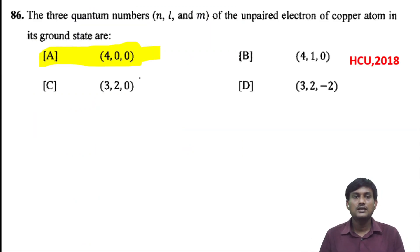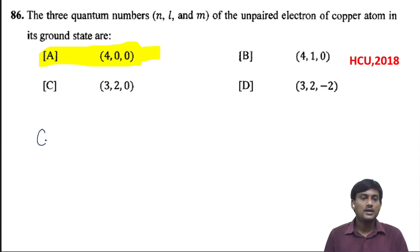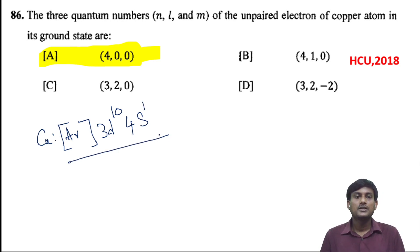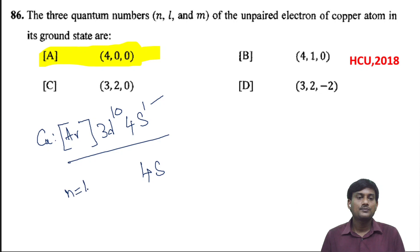The three quantum numbers N, L, and M of the unpaired electron of a copper atom in the ground state. The electronic configuration of copper is: argon, 3D10, 4S1. This is the ground state electronic configuration of copper. The unpaired electron occupies the 4S orbital. The quantum numbers for the 4S orbital are N=4 and L=0, so M is equal to 0. This is the correct option.